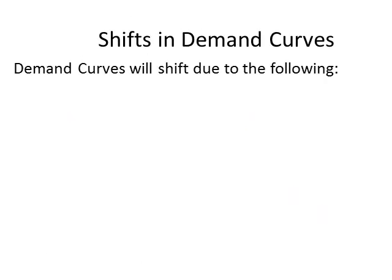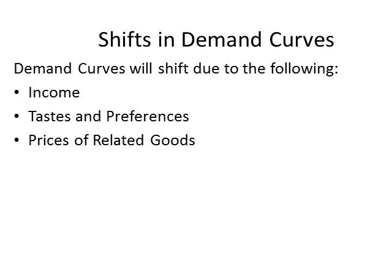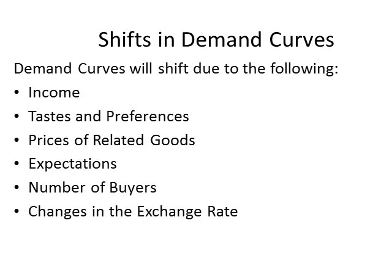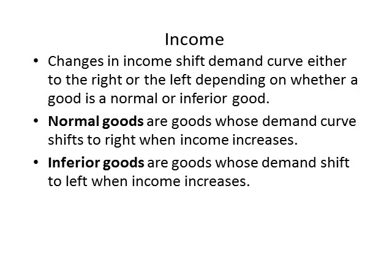There are six things that can shift the demand curve: income, tastes and preferences, prices of related goods, expectations, number of buyers, and changes in the exchange rate. A change in income will cause the demand curve to shift either to the right or to the left, depending on the type of good and how income changes. A normal good is a good whose demand curve shifts to the right when an individual's income increases.